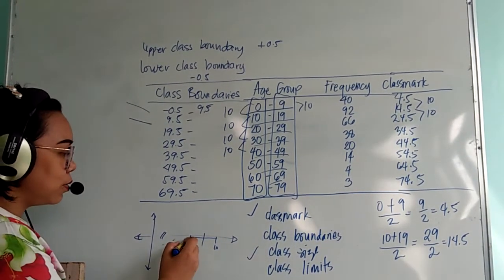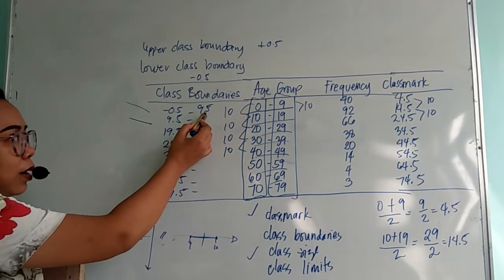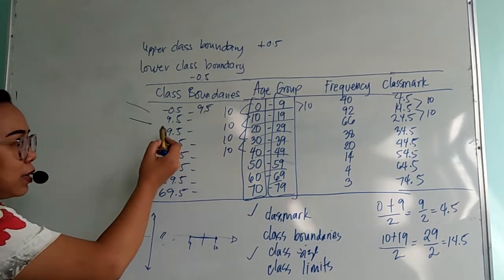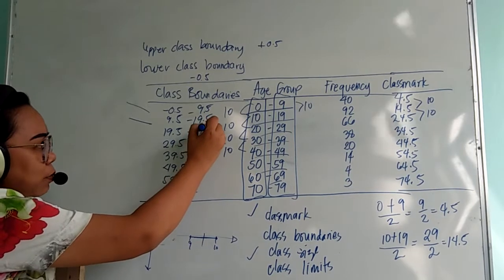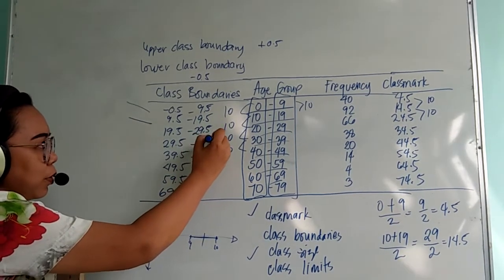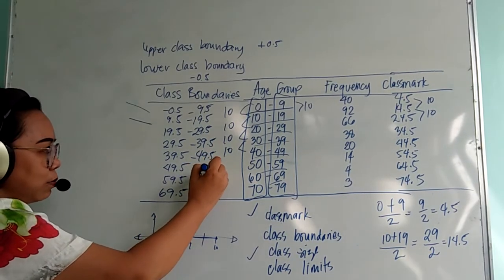So there is no numbers in between your upper limit and the next lower limit. So this is 19.5, 29.5, 39.5, 49.5, 59.5.